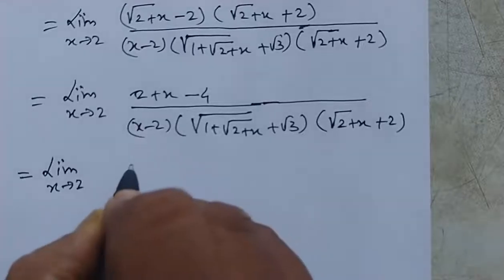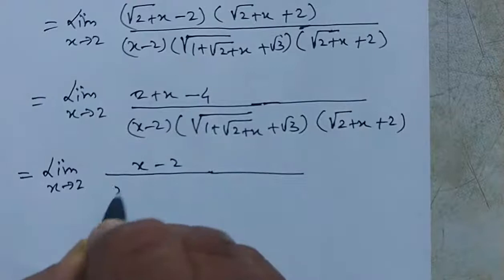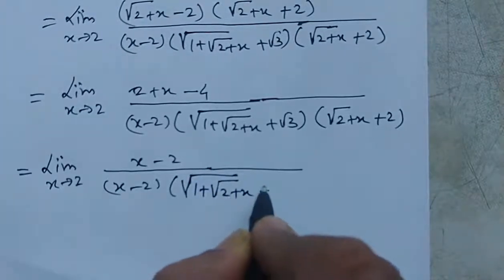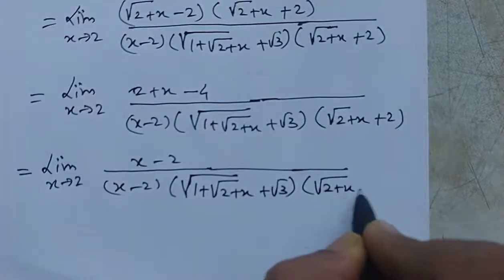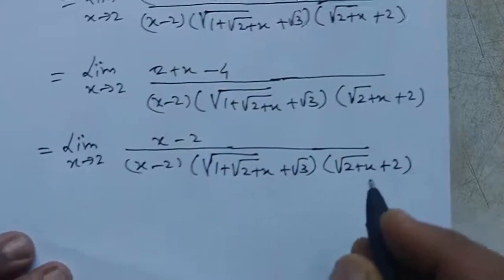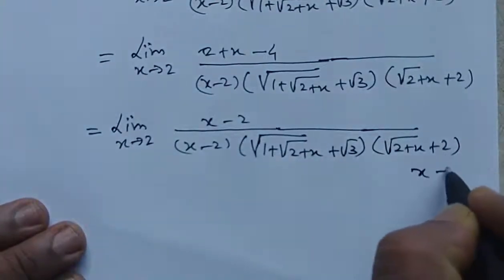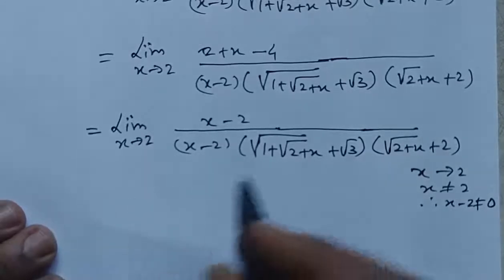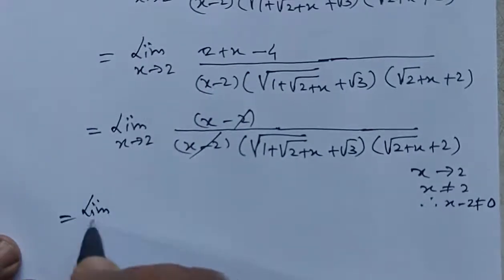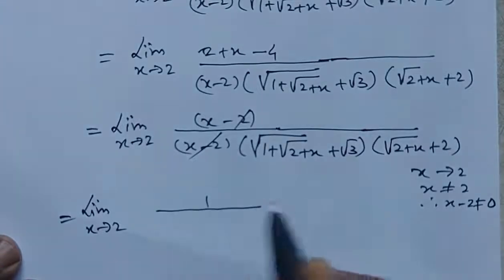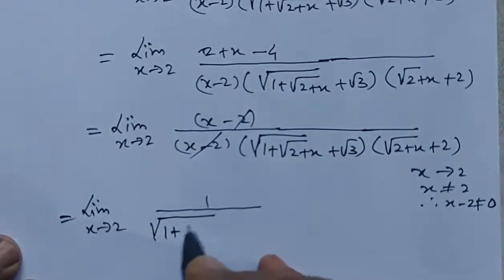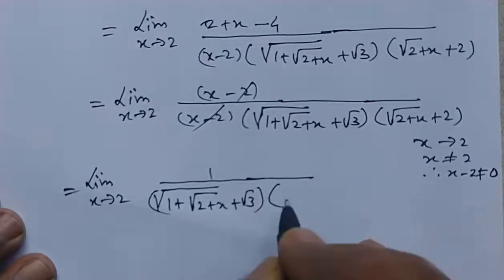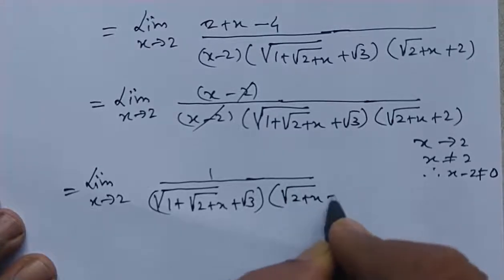Since x is tending to 2, x is not equal to 2, so x minus 2 is not equal to 0. We cancel the common factor x minus 2, giving the limit as: 1 divided by (square root of (1 plus square root of (2 plus x)) plus root 3) into (square root of (2 plus x) plus 2).